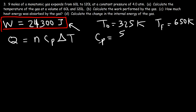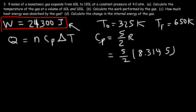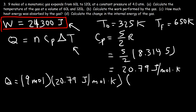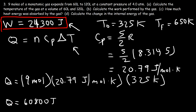Calculating Cp: (5/2) × 8.3145 = 20.79 joules per mole per Kelvin. Now Q = n × Cp × ΔT = 9 × 20.79 × 325 = approximately 60,800 joules, rounded to three significant figures. That's the answer for part C.